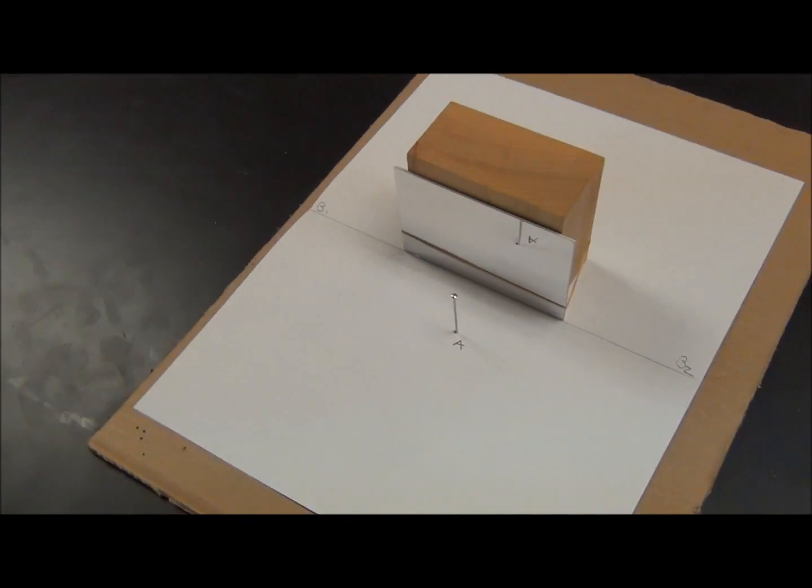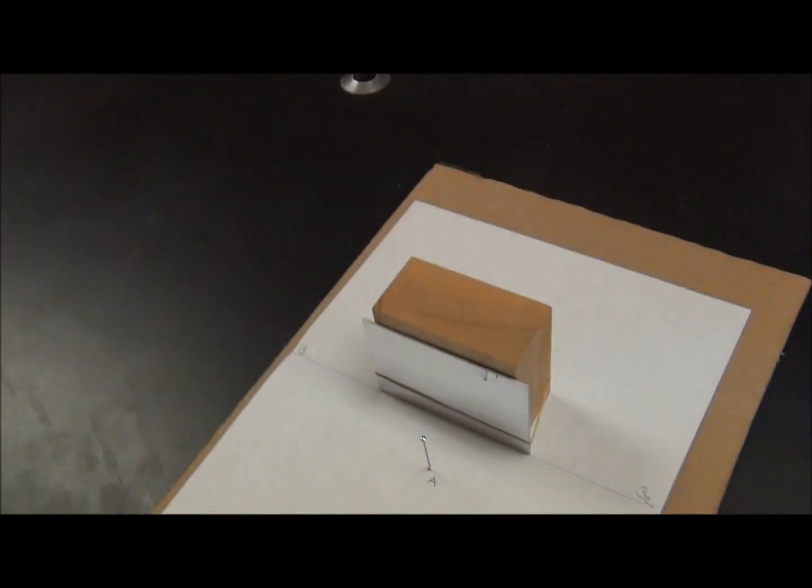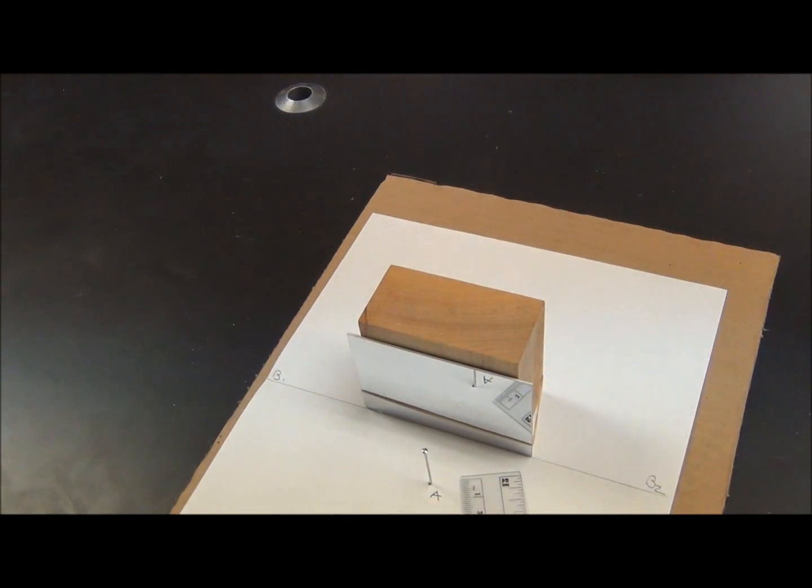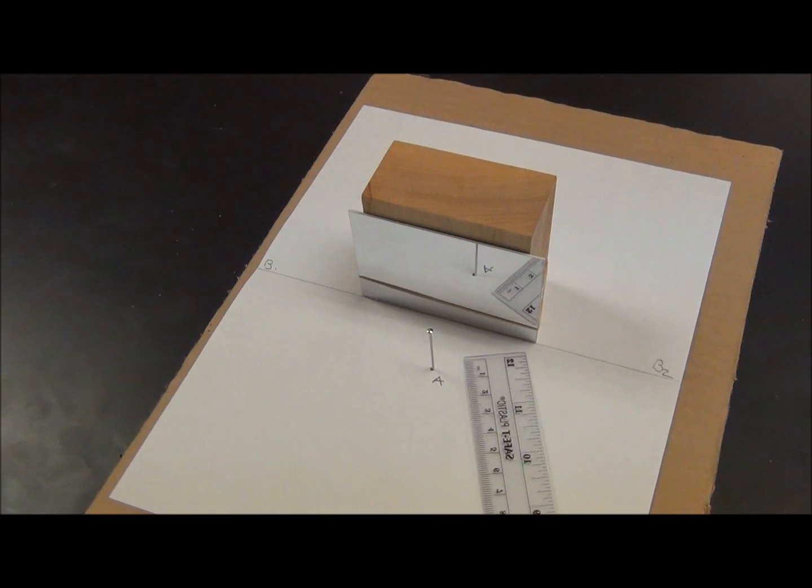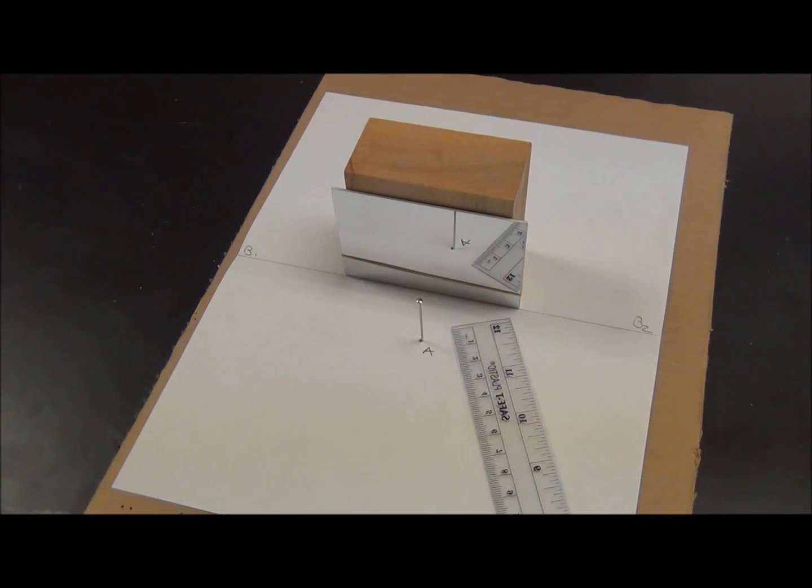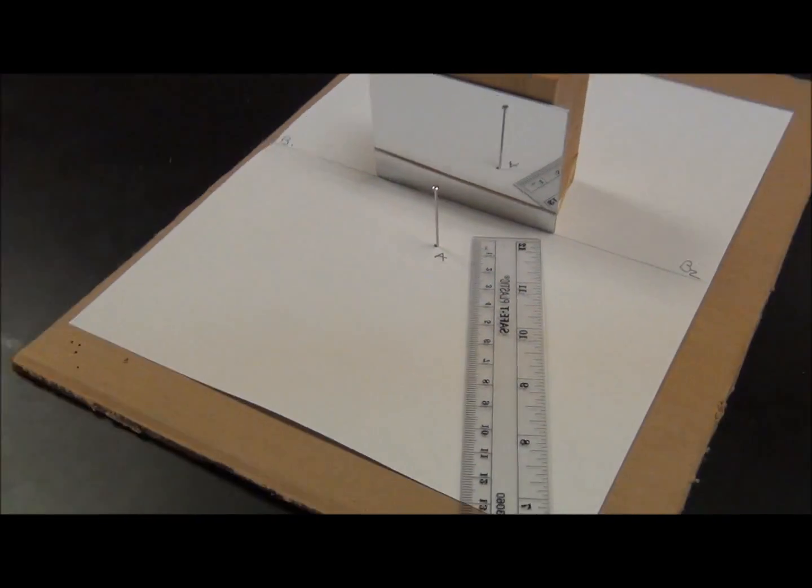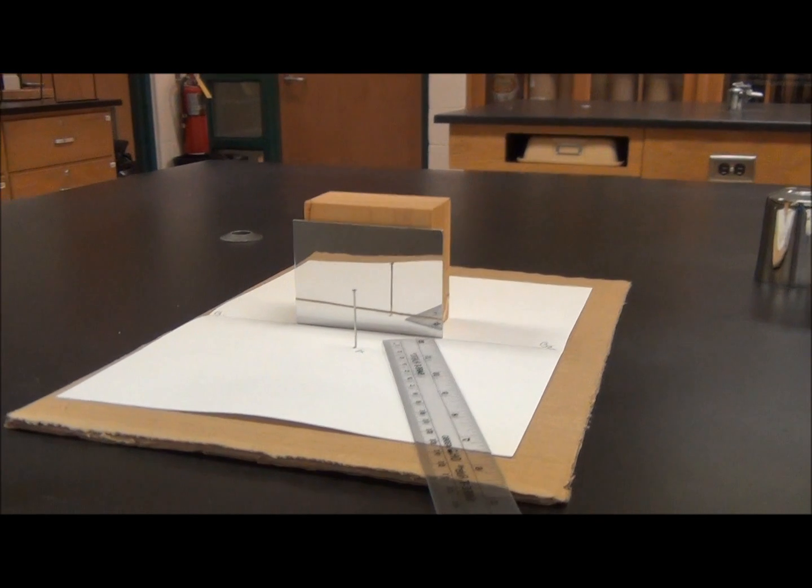Now take a ruler, place the ruler on the right-hand side of the pin, and sight along the pin in the mirror looking for the image. You have to get down at the level of the lab table. Use the ruler as if it is pointing directly at the pin. You should see nothing but the image of the pin.